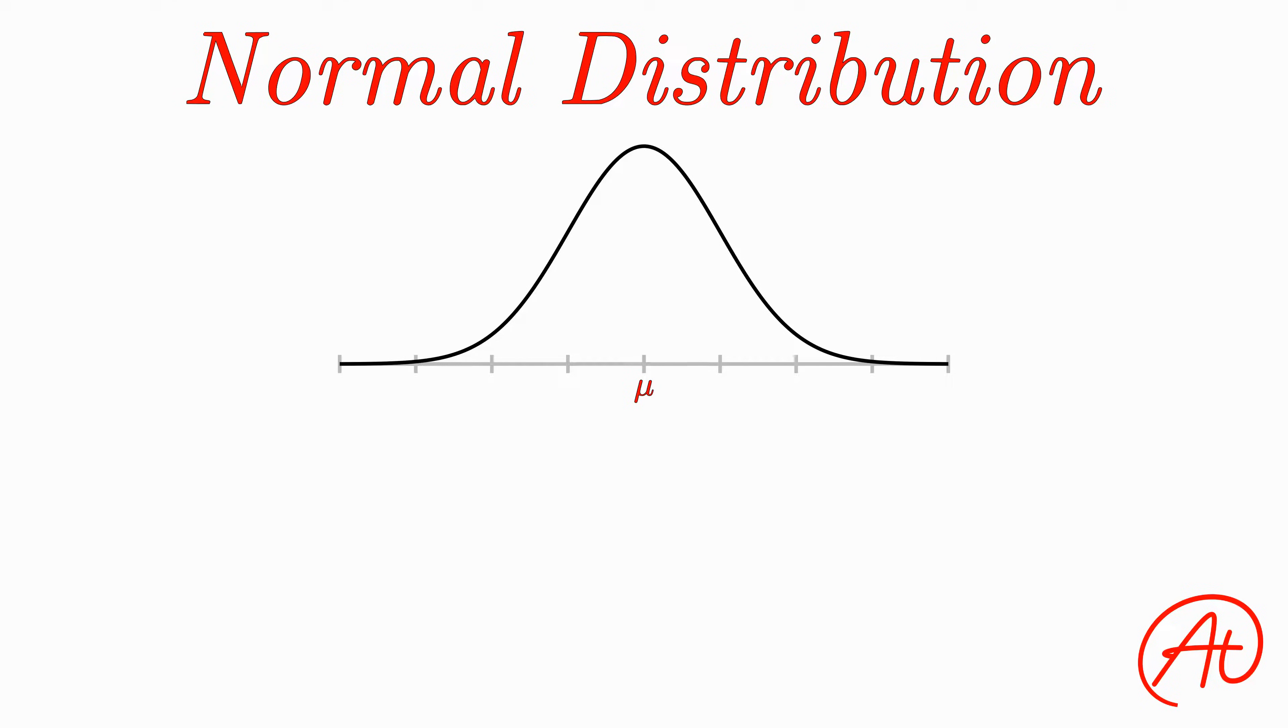Although the normal distribution technically continues indefinitely in either direction, it only really has significant probability values between three standard deviations below and above the mean. In fact, as a general rule of thumb for a normal distribution, between plus or minus one standard deviation, there is 68% of the distribution's data. Between plus or minus two standard deviations, there is 95% of the data. And finally, between plus or minus three standard deviations, there's 99.7% of the data.